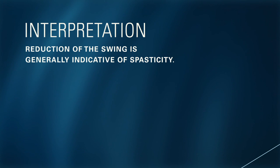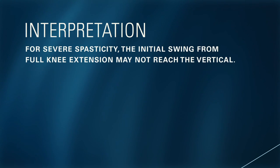In presence of spasticity, irregularities in the characteristic motion of the swinging limb and a decrease in the number of oscillations may be observed. For severe spasticity, the initial swing from full knee extension may not reach the vertical.